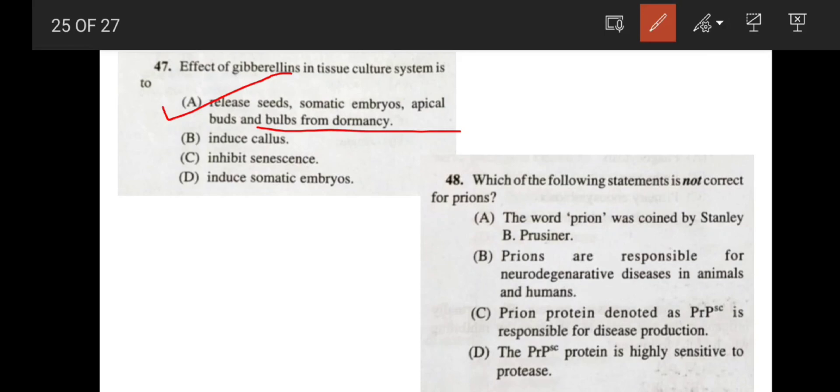Now, coming to the question number 48, it is about prions. The word, which statement is not correct? The word prion was coined by Stanley B. Prusiner. It's correct. Prions are responsible for neurodegenerative disease in animals and humans. It is also correct. Prion proteins denoted as PrPSc is responsible for disease production. Yes, it is correct. The PrPSc protein is highly sensitive to protease. It is not correct because it is resistant to protease. Prion protein PrPSc is resistant to protease. So correct answer would be your option D.